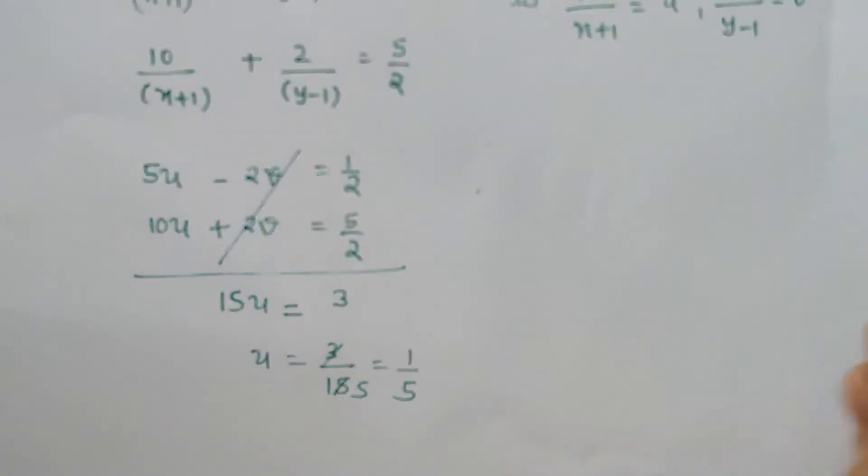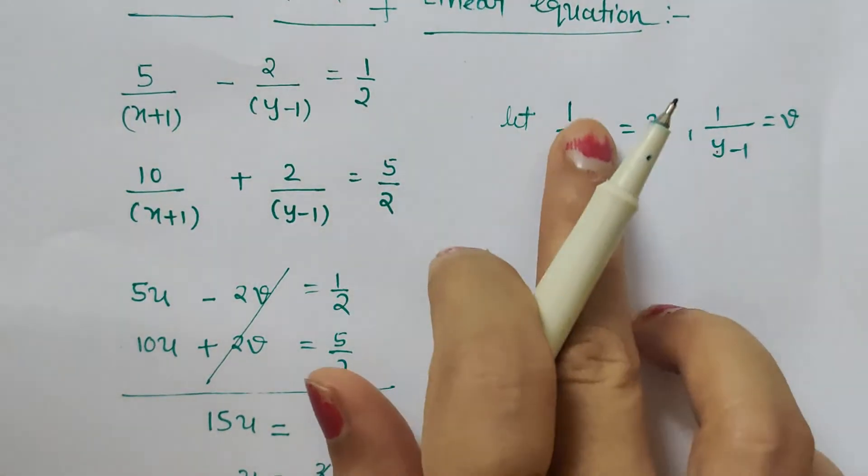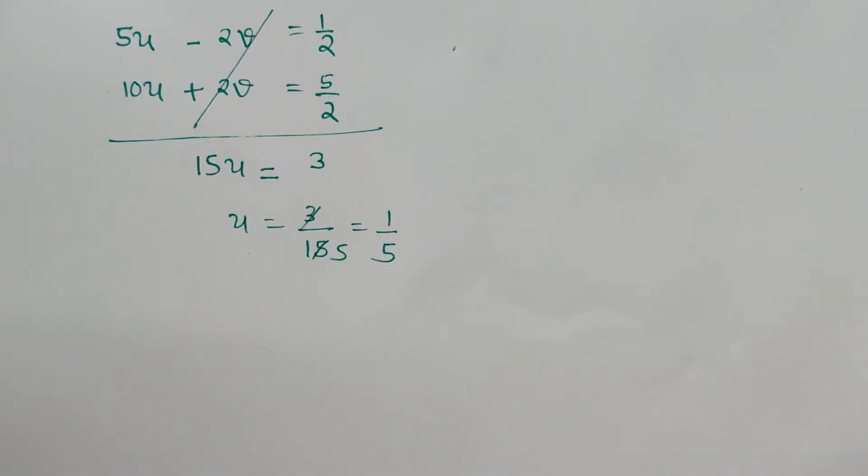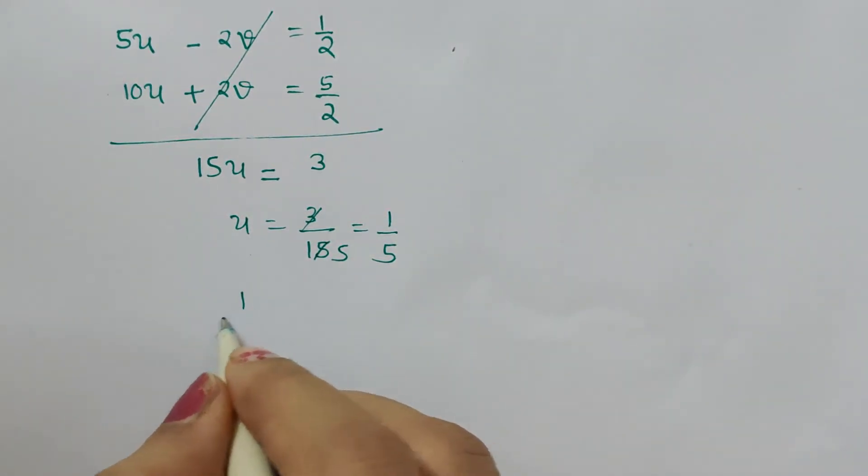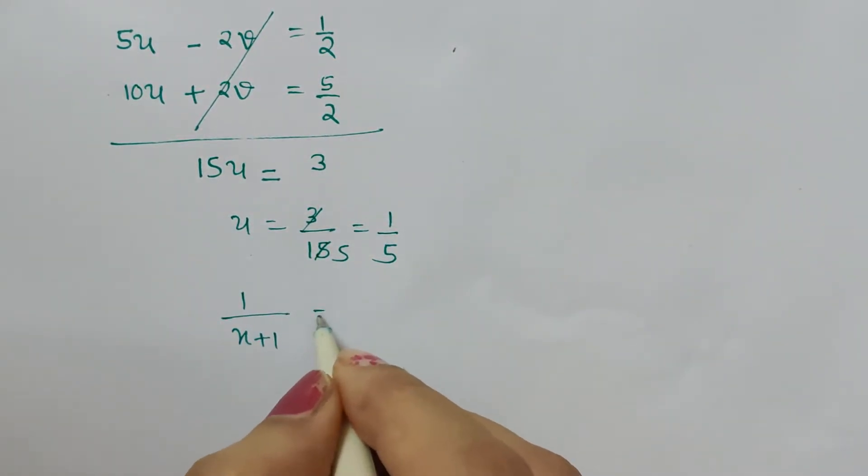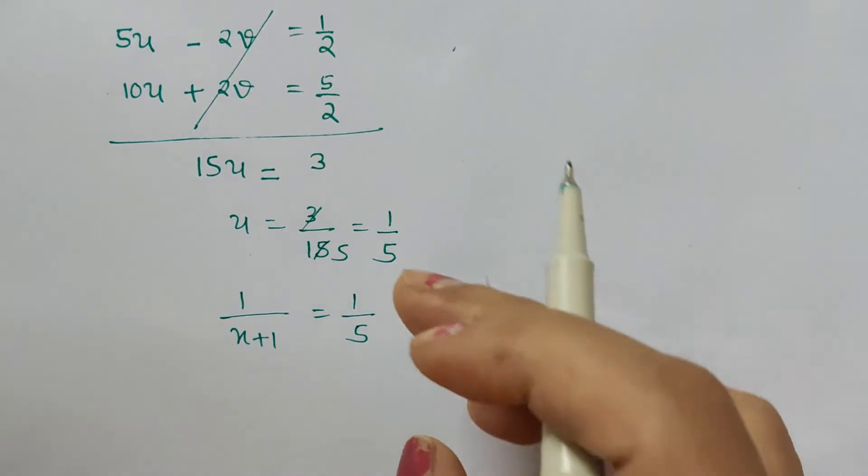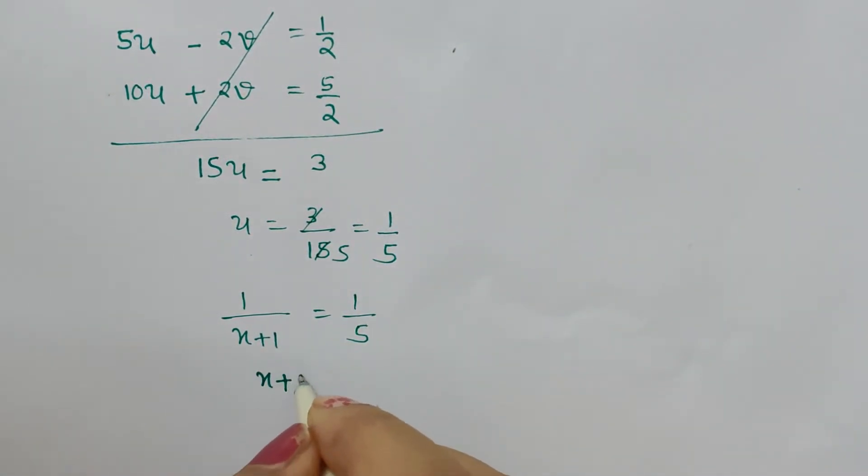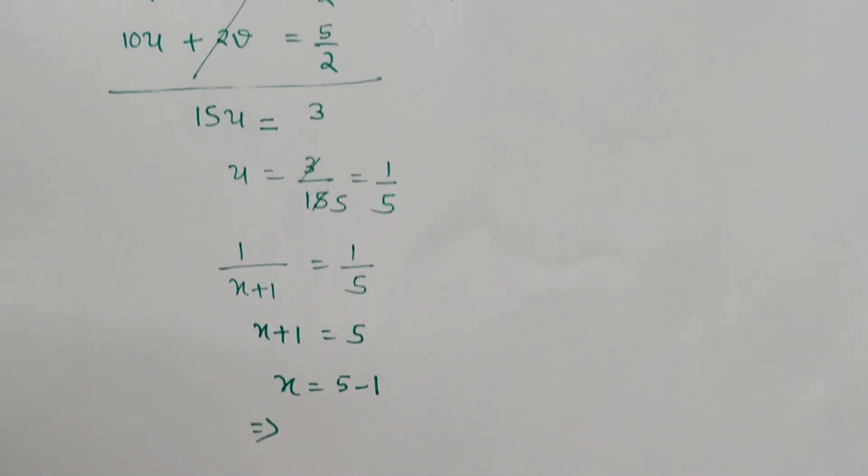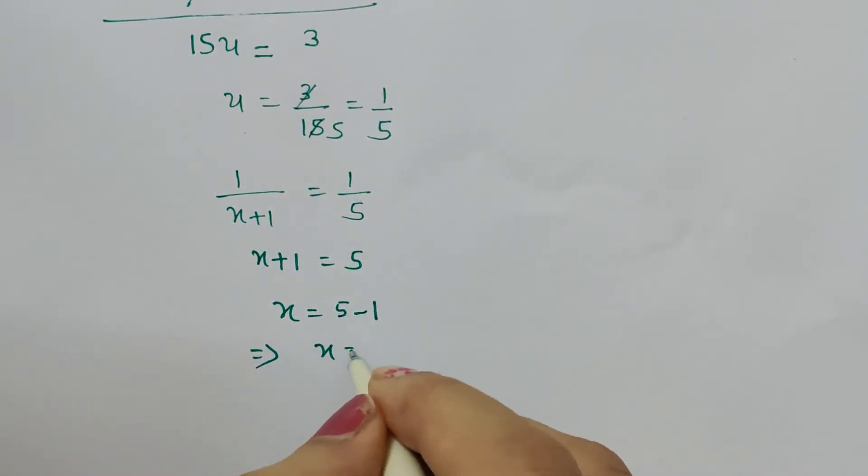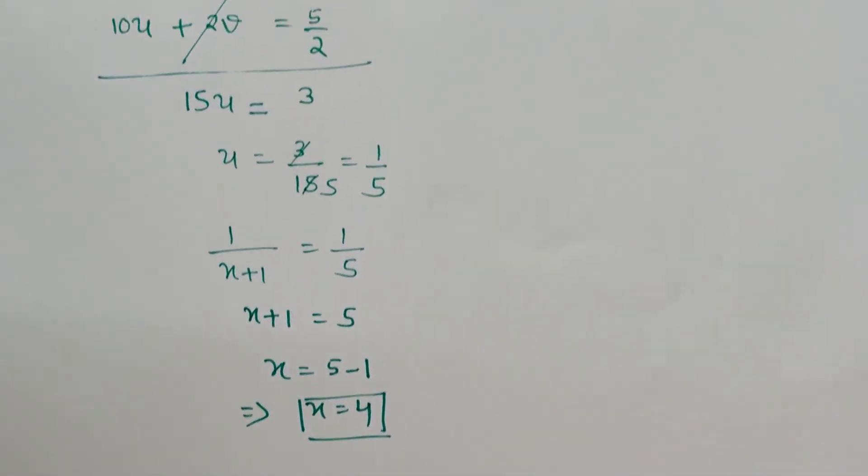Now what we assumed u as: u is nothing but 1/(x+1). So here we will replace u: 1/(x+1) = 1/5. Reciprocate both sides, we get x+1 = 5, and x = 5-1, which implies x = 4. So the value of x obtained is 4.